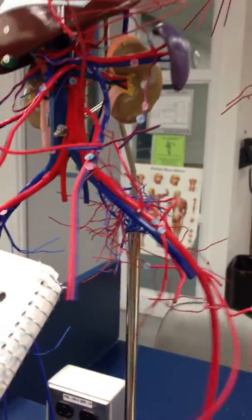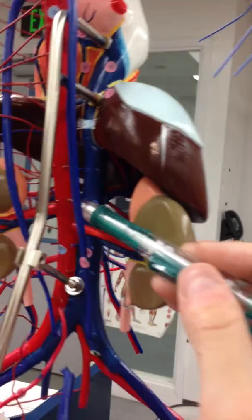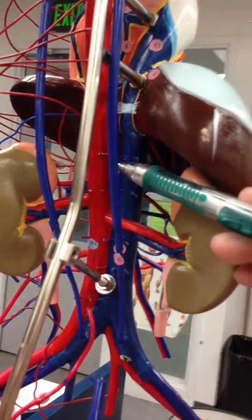The iliolumbar arteries are back here, the little spikes sticking out of the abdominal aorta. These little spikes here.